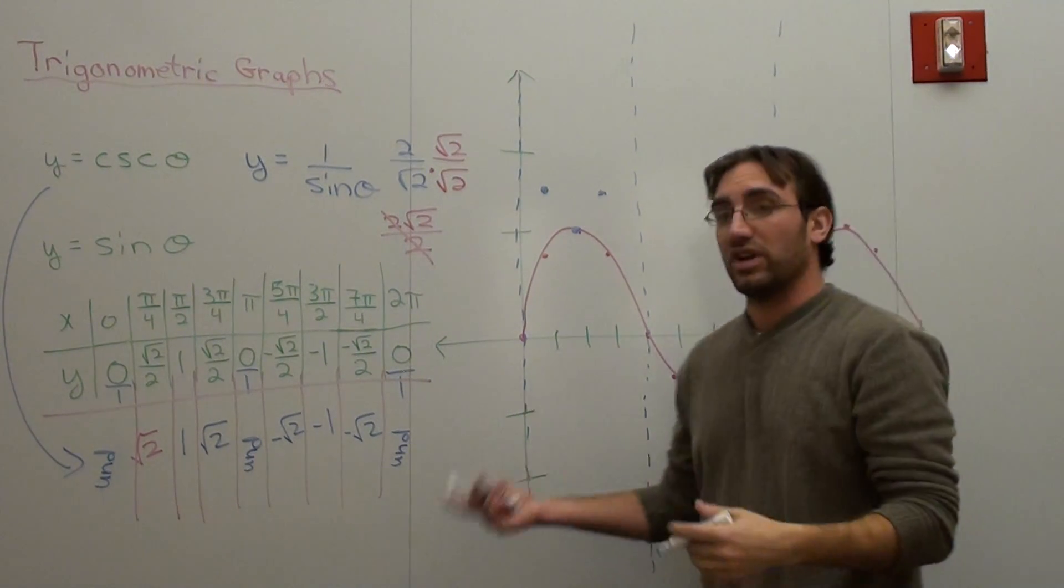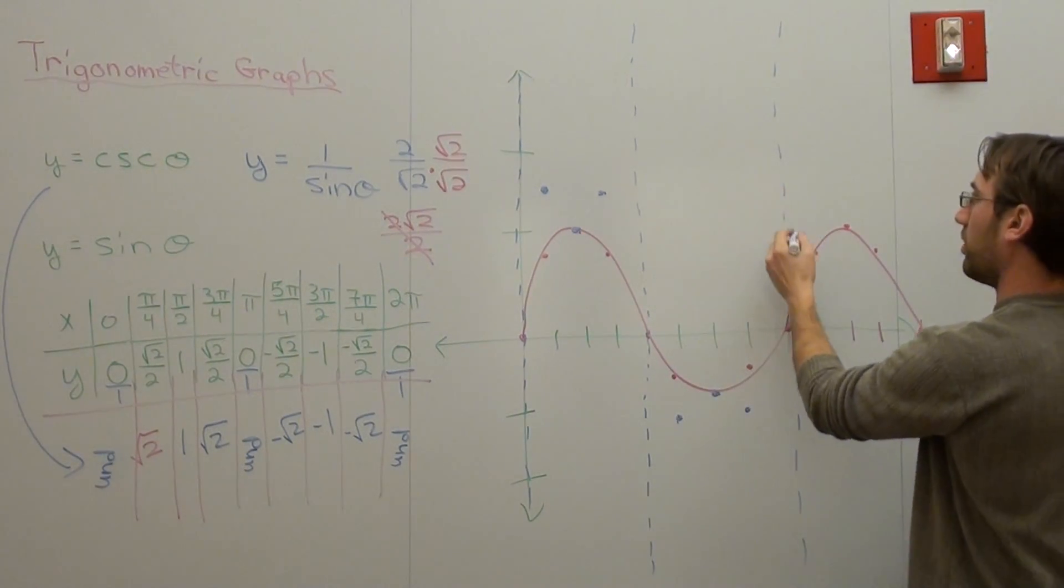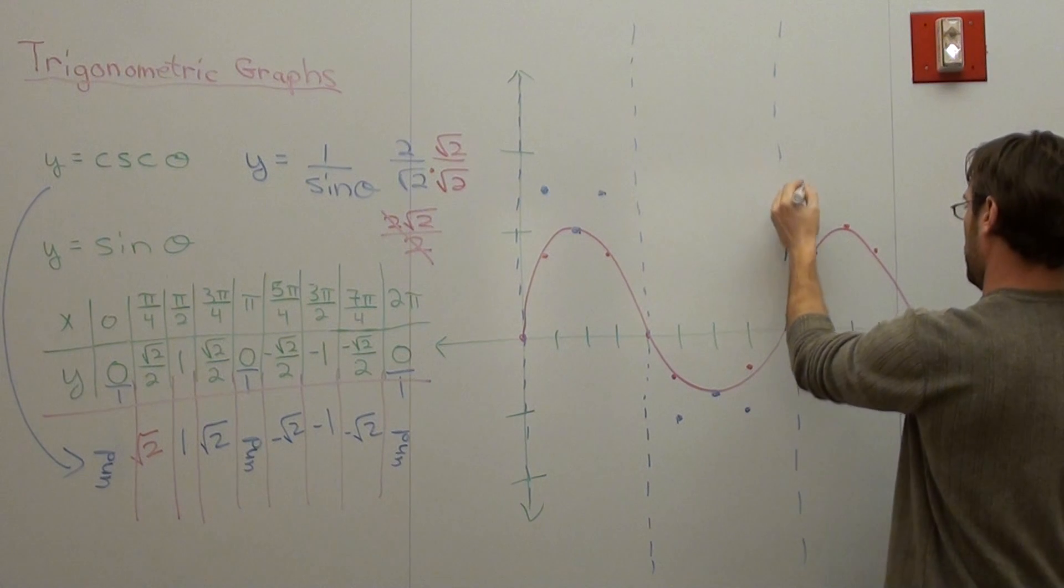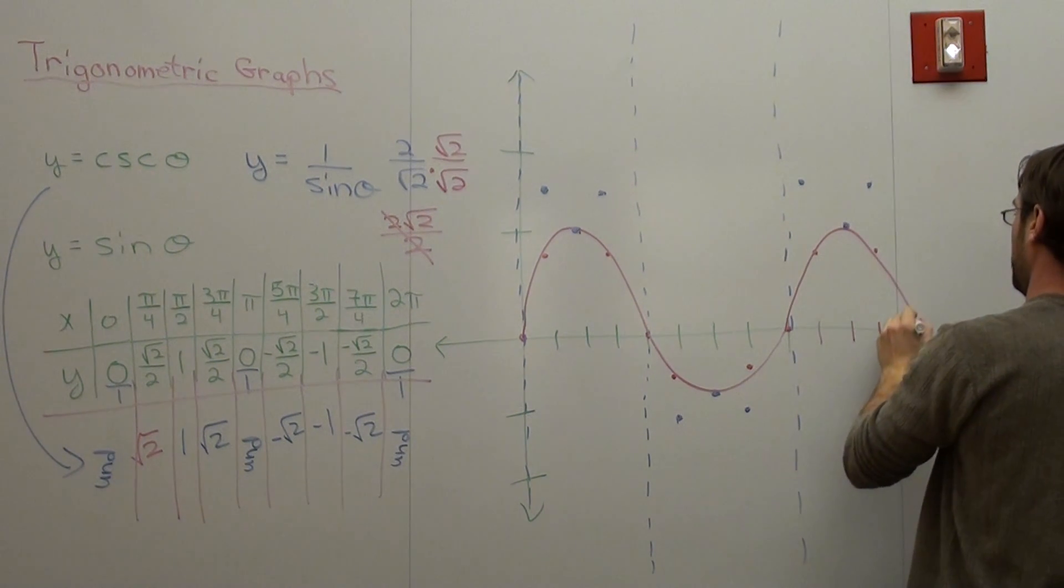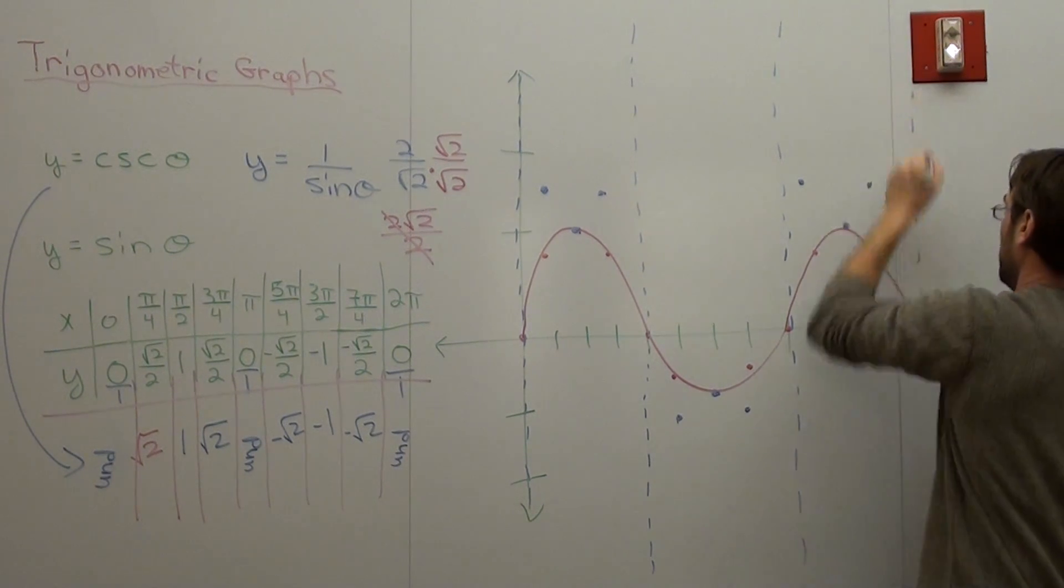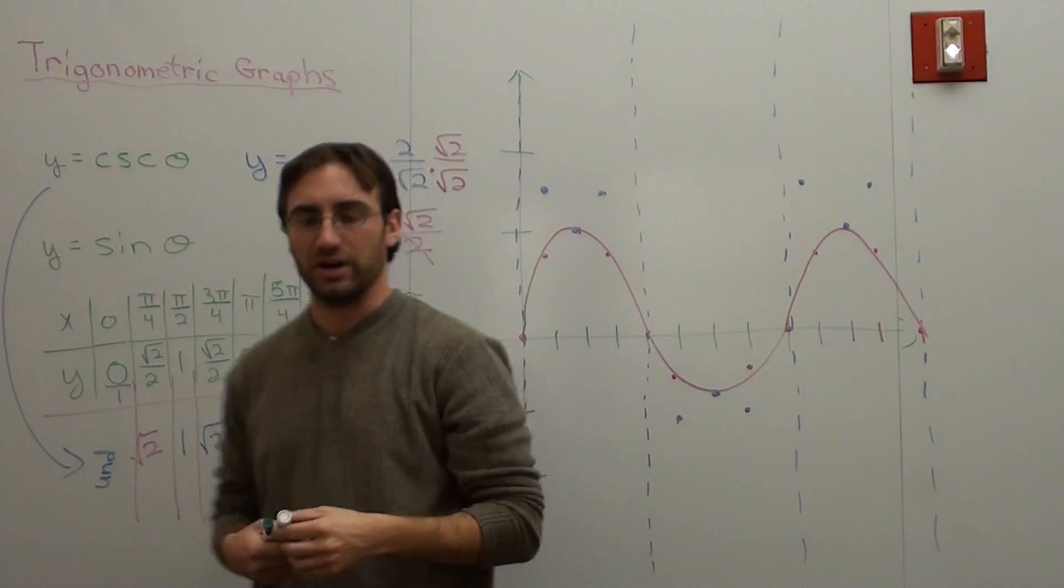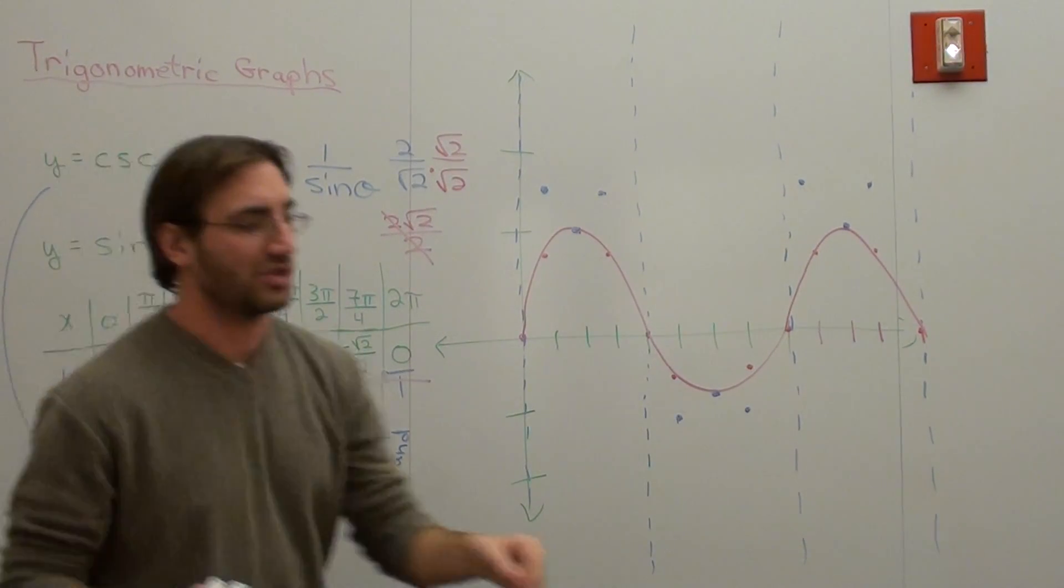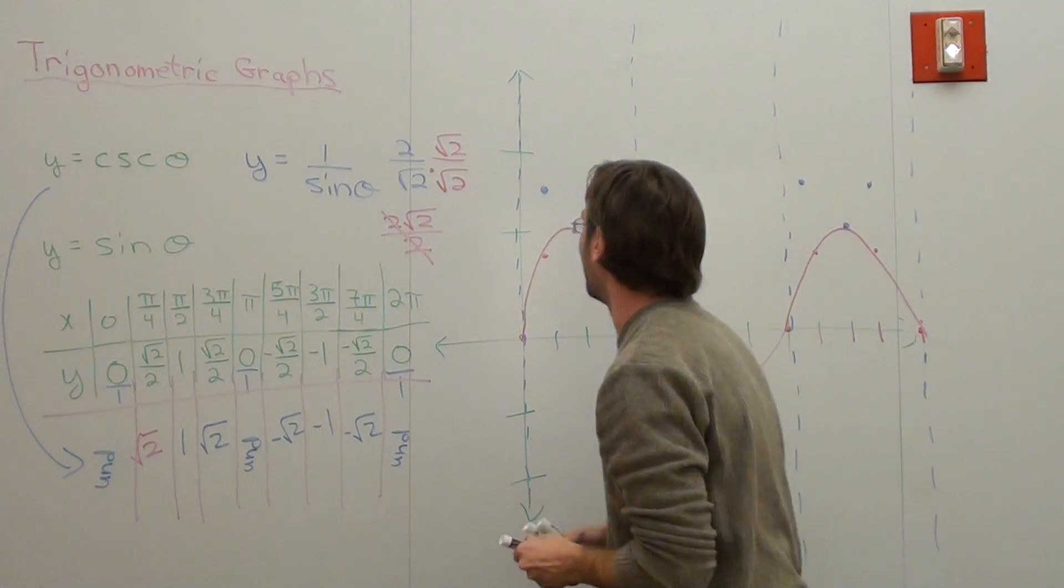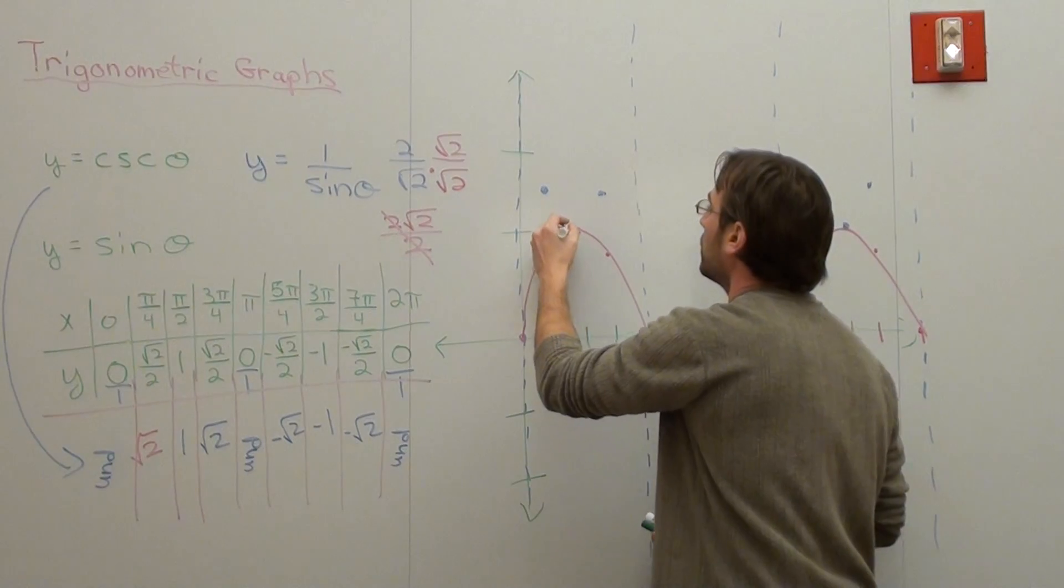The next one's at negative 1.414, then undefined. I didn't do the table values for any of the other ones, but I can already tell you what it looks like. The next one will be 1.414 right here, and it'll be undefined on the very next one. Let's make it consistent - it'll look like that. So this is what your graph looks like, pretty bizarre.